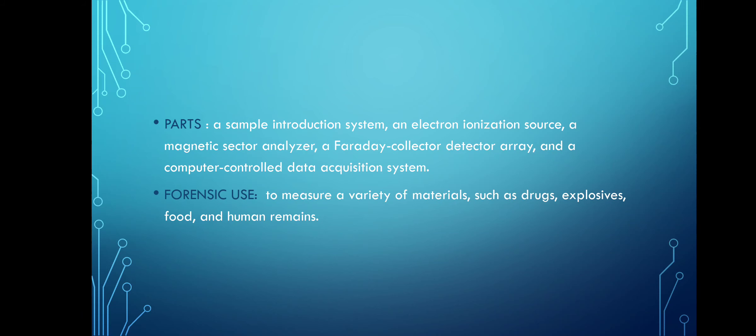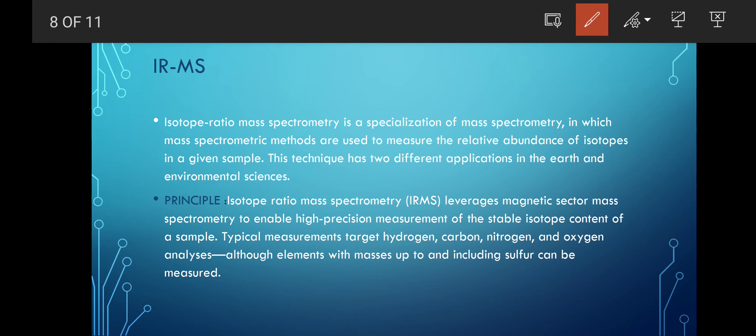Next is IRMS - isotope ratio mass spectrometry. It is a specialization of mass spectroscopy in which mass spectrometric methods are used to measure the relative abundance of isotopes in a given sample. Here they are measuring the abundance of isotopes. The technique has two different applications in earth science and environmental science.